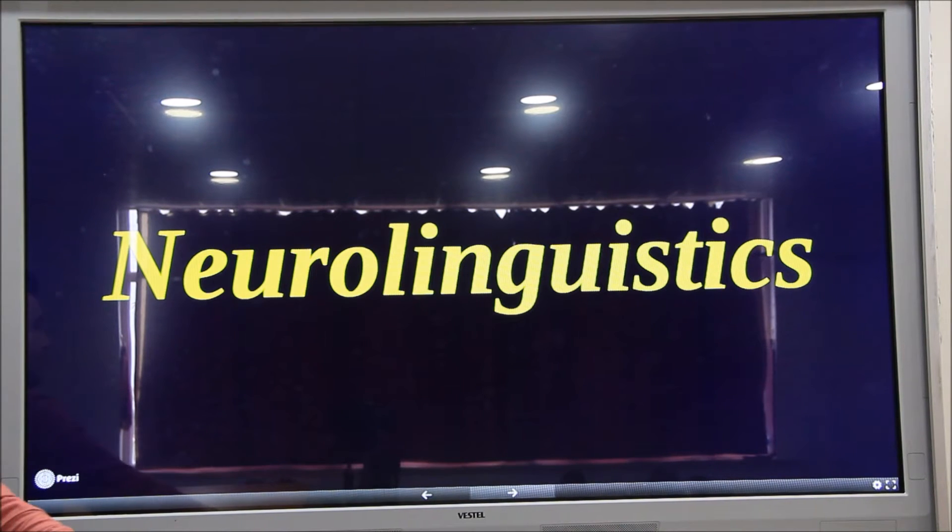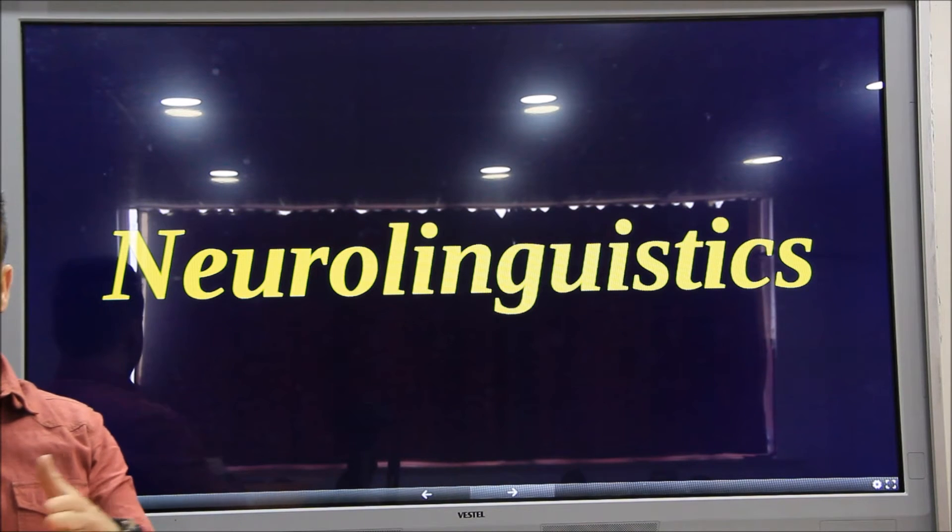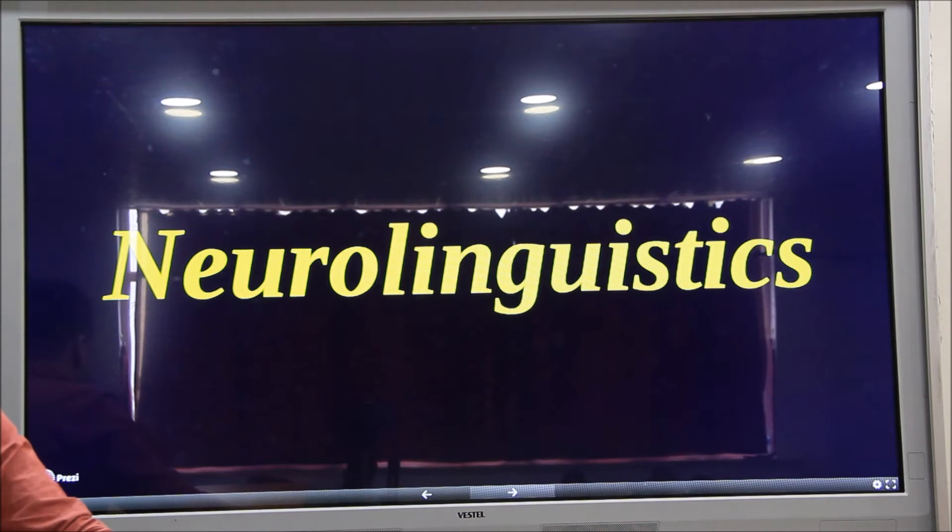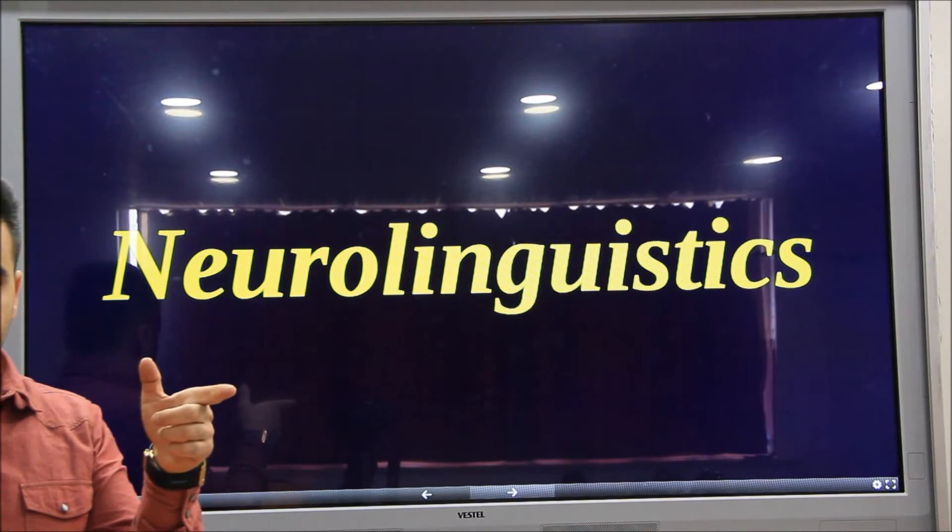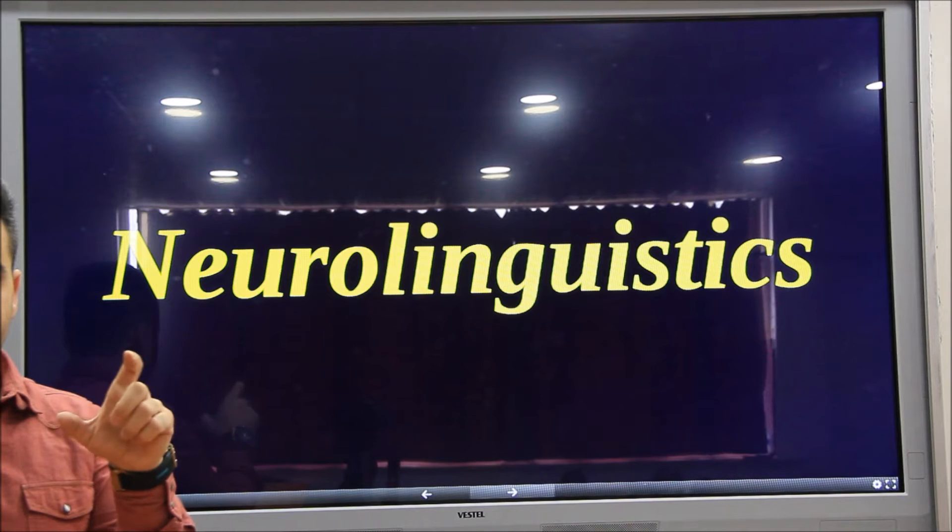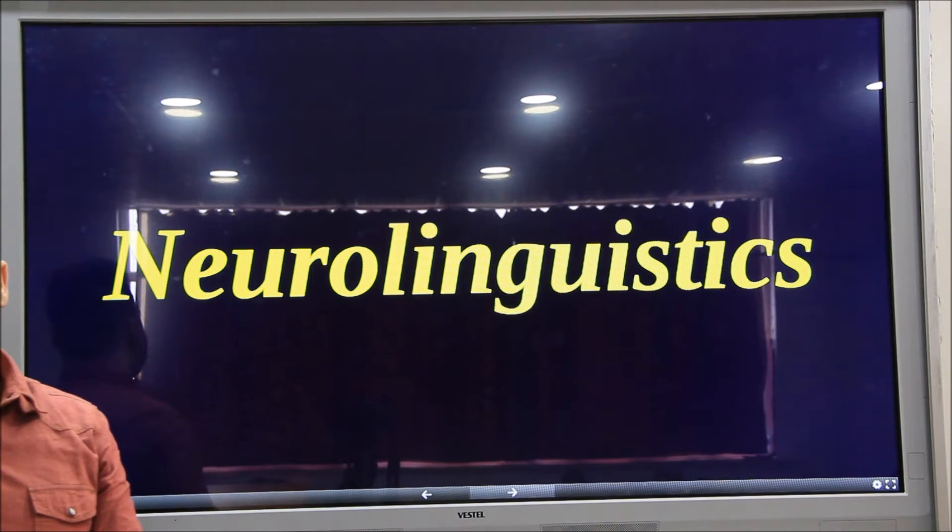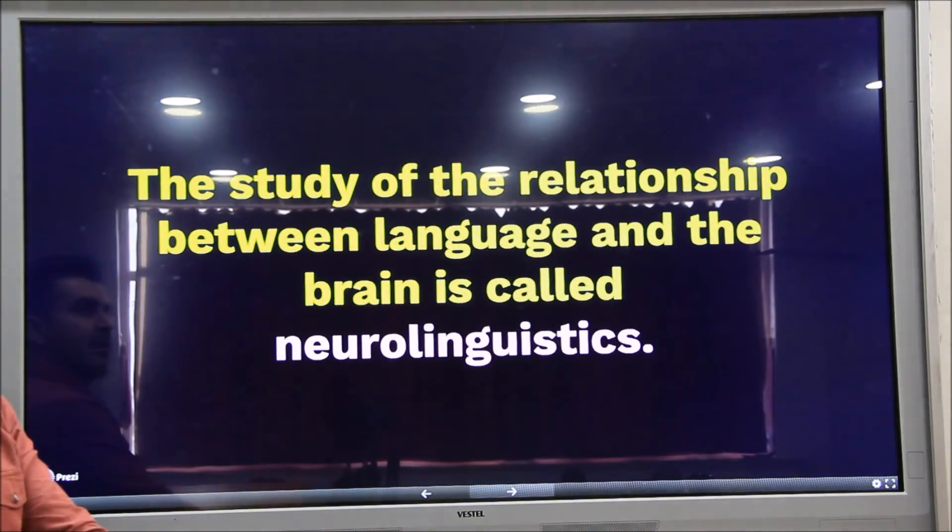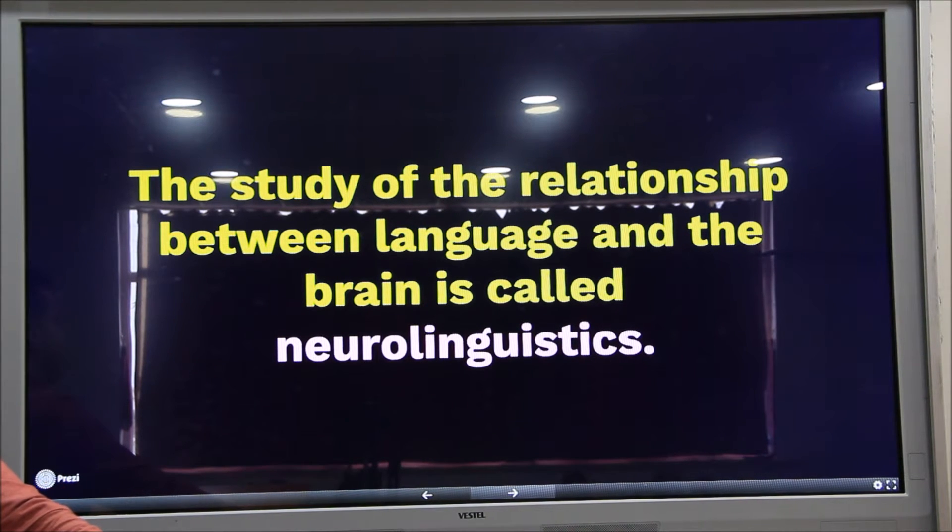But of course, to analyze the relationship between language and brain, we use neurolinguistics. And neurolinguistics deals with the relationship between brain and language. The study of the relationship between language and brain is called neurolinguistics.